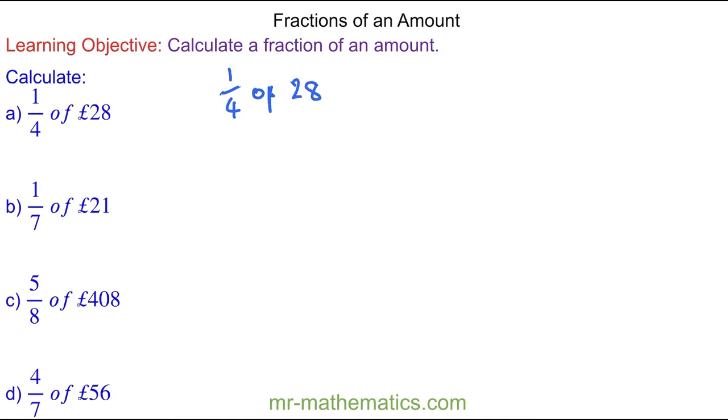And to work out a quarter of 28, we're going to divide 28 by 4, where this 4 is here. And 28 divided by 4 is 7. So one quarter of 28 is equal to 7.